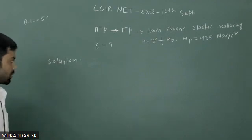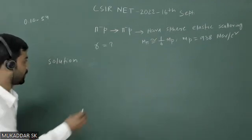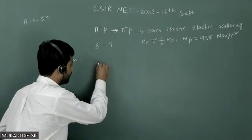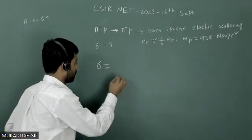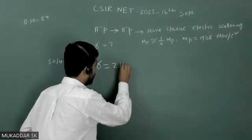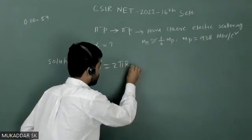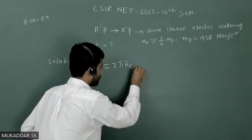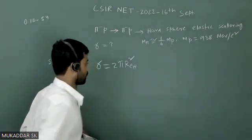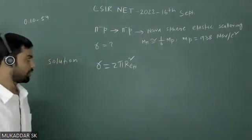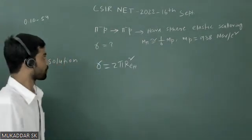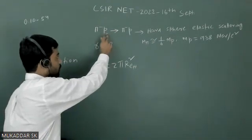And we know that total scattering cross section quantum mechanically at high energy regime that will be σ equals to 2πr_effective² where r_effective will be the effective radius of π⁻ and proton particles.